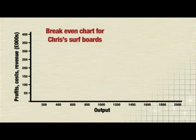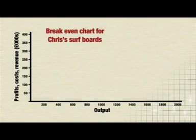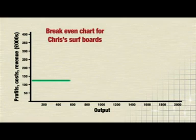The next thing to go on is the fixed cost line, which is always a horizontal line, as the fixed costs don't change. In this case, they're £120,000.